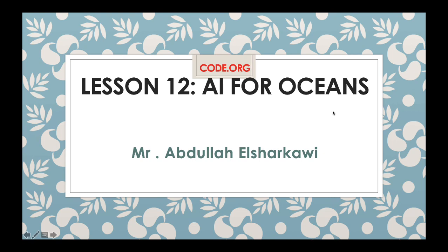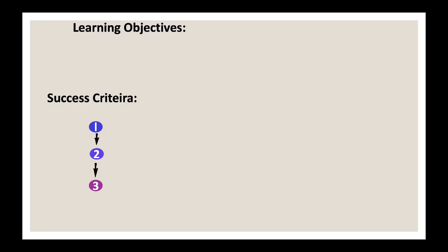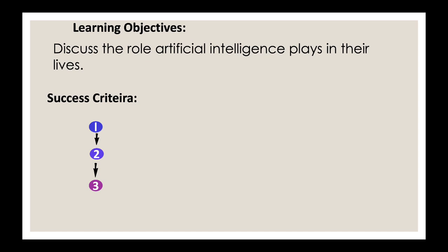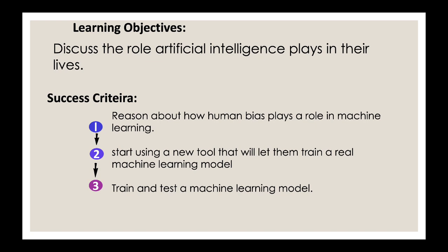Good morning students. Today our lesson is Lesson 12 on code.org: AI for Oceans. What does AI mean? This is what we're going to find out today. Our learning objectives are to discuss the role artificial intelligence plays in our lives, reason about how human bias plays a role in machine learning, and start using a new tool that will let you train a real machine learning model.